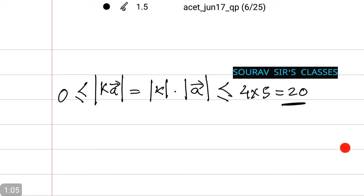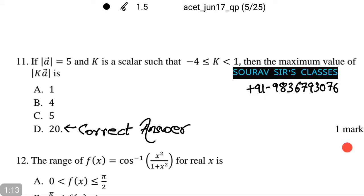Thus the maximum value of k times vector a is equal to 20. The correct answer is option number D.